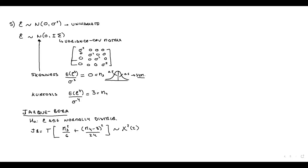The Jarque-Bera statistic equals T times [M3-squared divided by 6 plus (M4 minus 3) squared divided by 24], distributed as chi-square with two degrees of freedom. If skewness is close to zero and kurtosis close to three, both terms approach zero, so the statistic is very small — indicating normality.